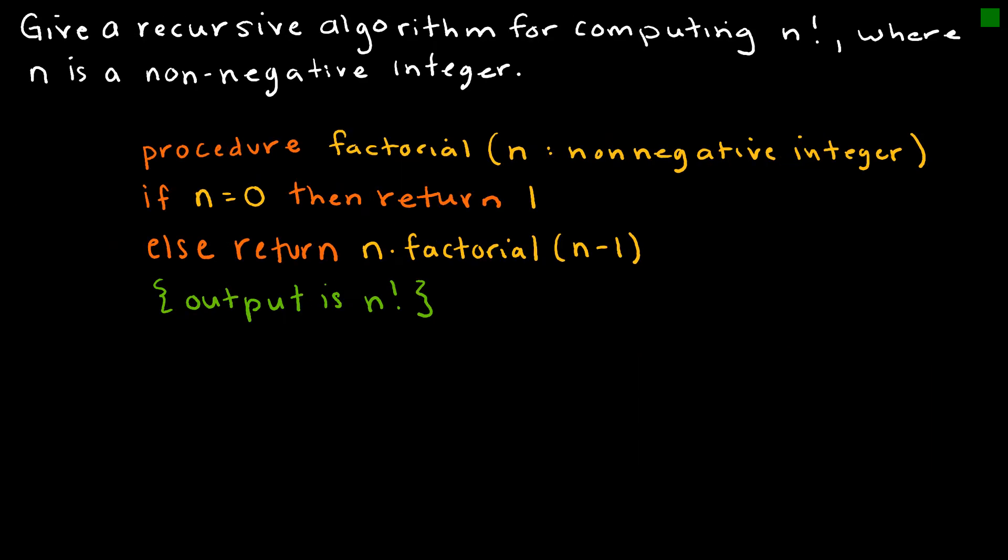So let's look at one now for n factorial. n factorial, obviously, we take whatever the value is times each value all the way down to 1. So the procedure, again, we're just going to call it factorial. And we're taking the factorial of n. And n is just going to be a non-negative integer, again, given to me up here. Then it's saying, if n is equal to 0, then return 1, because 0 factorial is 1.